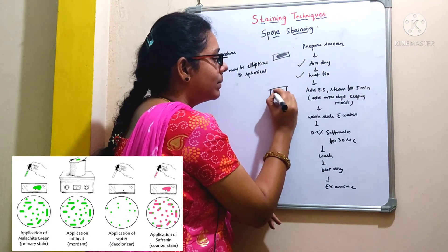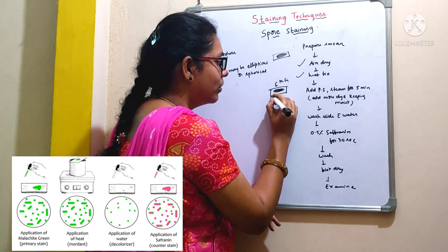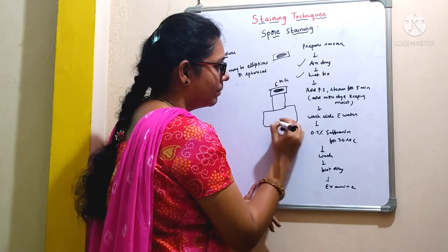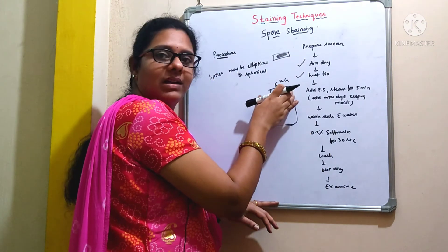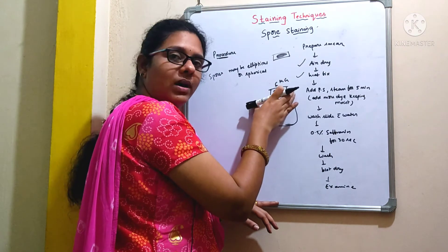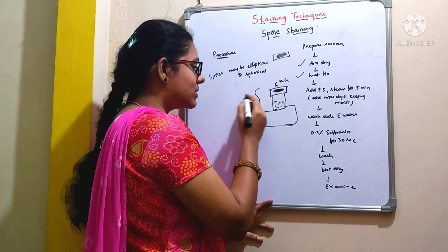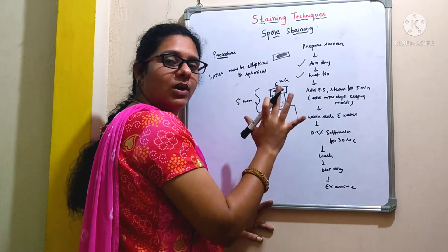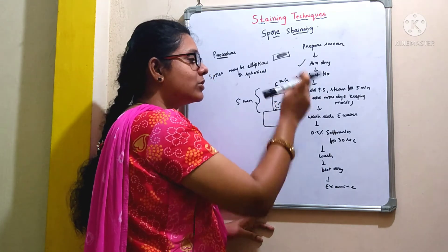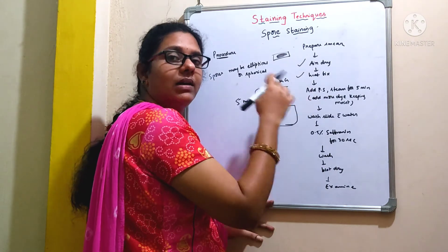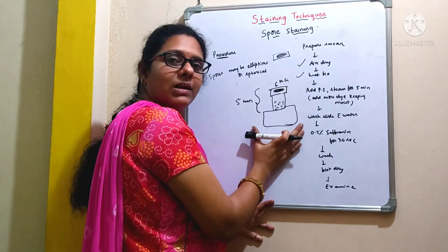After heat fixing, you add the primary stain, malachite green. After its addition, you place this slide on top of a beaker containing boiling water — you are steaming the bacterial emulsion. During this steaming process, the primary stain malachite green will enter into the spore of the bacteria. You steam it for 5 minutes. We are forcing the primary stain into the spore, and we add malachite green repeatedly if required, to keep the slide moist and not let it dry.